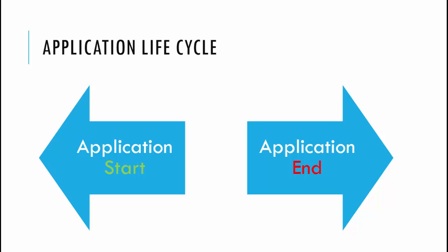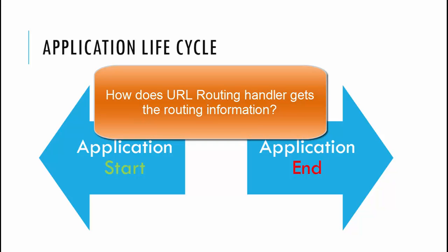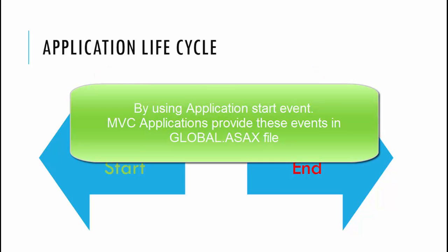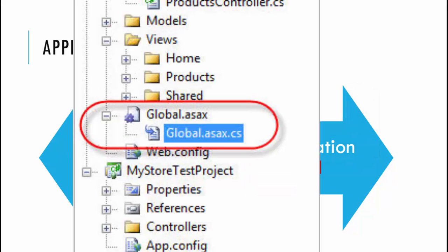We have seen that the URL routing module is the starting point for the MVC application, which has a collection of predefined routes to map from. How does the URL routing handler know which routes to map to? The answer is simple: by using the application start event. MVC provides these events in the global.asax file. Whenever you create an MVC application, you get a global.asax file in the root directory, which contains all application level events and all pre-start configurations managed in the application start event.